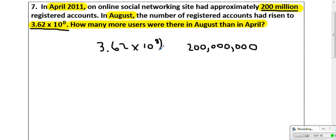So they're asking you how many more were there in August than in April. The only way to find that difference is to actually subtract. You have two options here. First, you could take this number, convert it into standard notation, and then subtract them and revert back to scientific notation. Or you could take this number and convert it into scientific notation and just do the subtraction in scientific notation. That's the way I'm going to go.